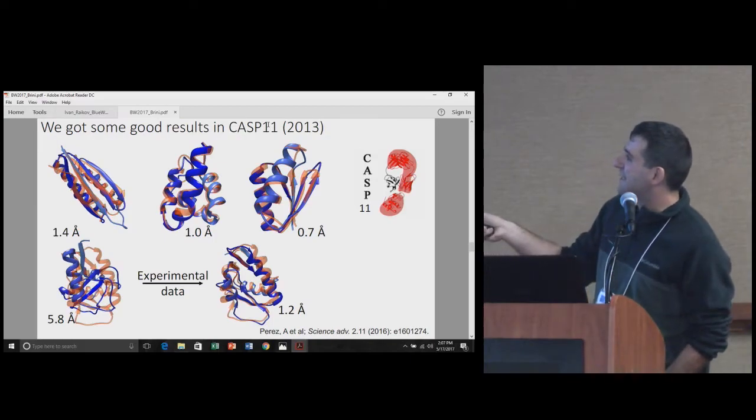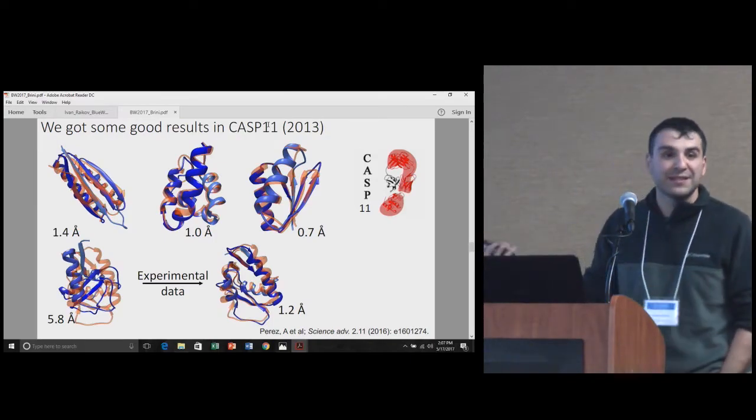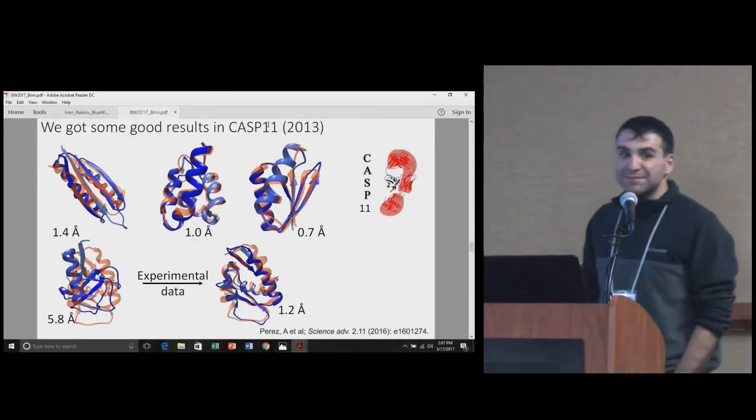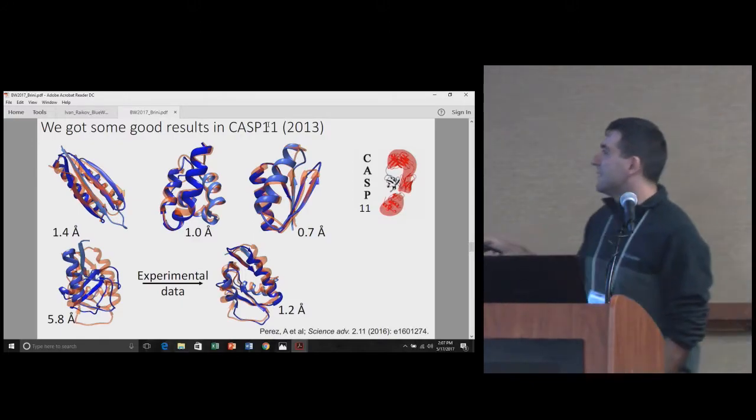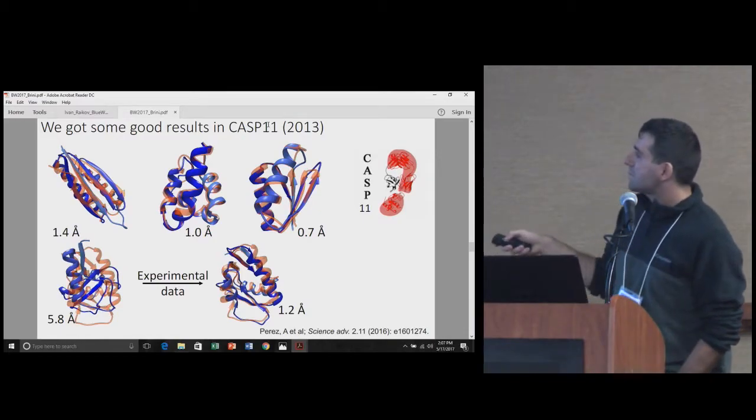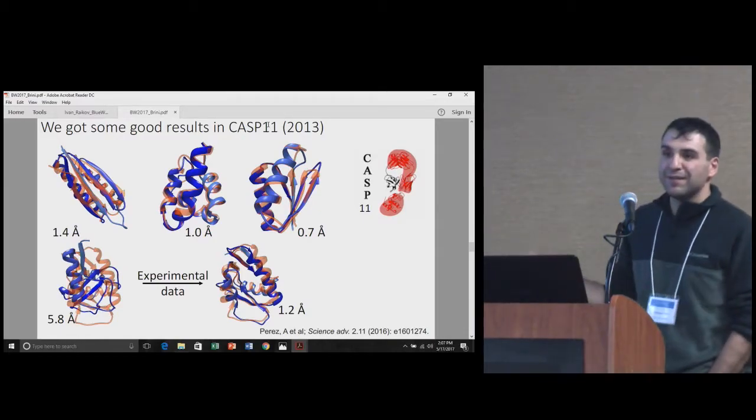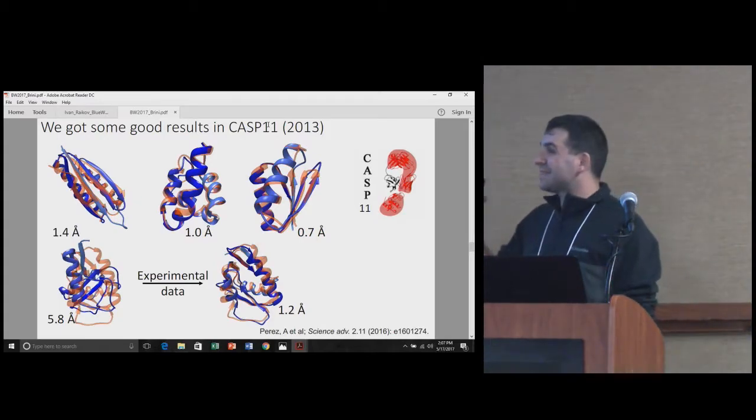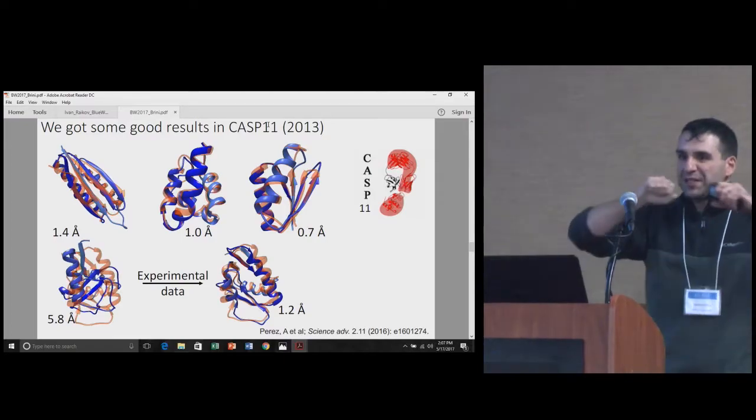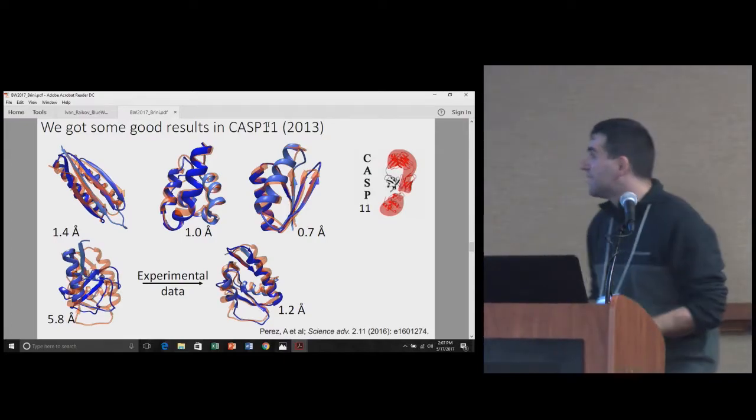We actually had some very good success. This number basically tells how different the experimental structure is from ours. Smaller is better. But these are all small proteins, and we did some work. At least we're still the only physics-based group that does this ab initio prediction from sequence to structure.